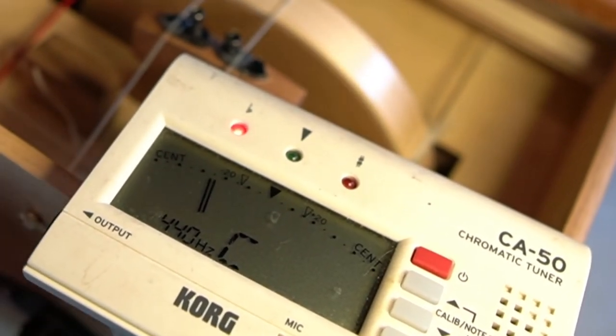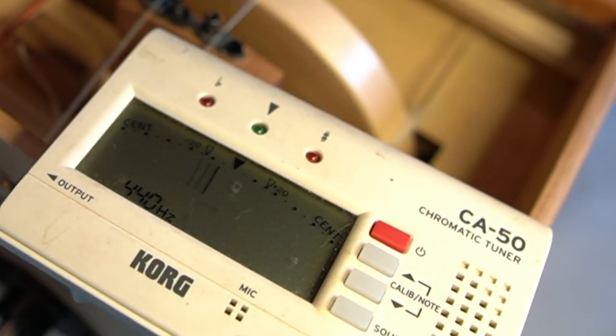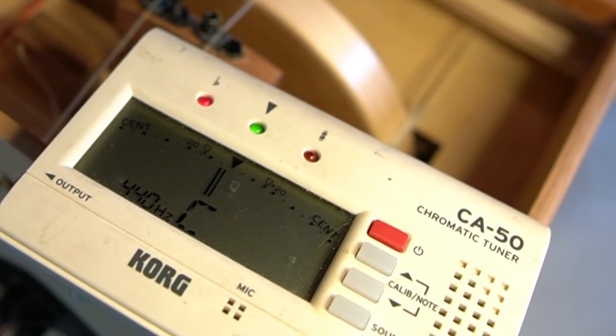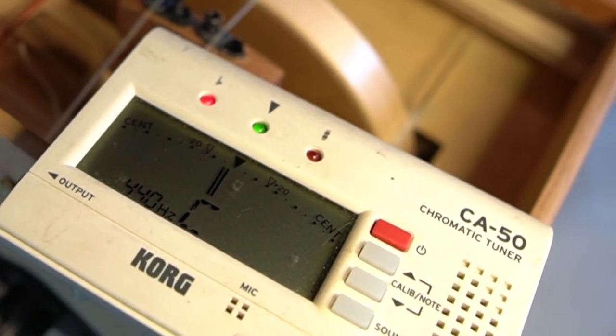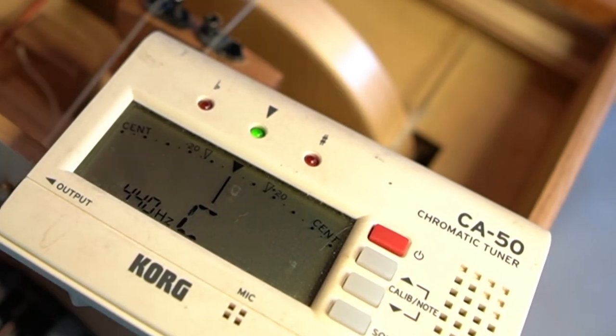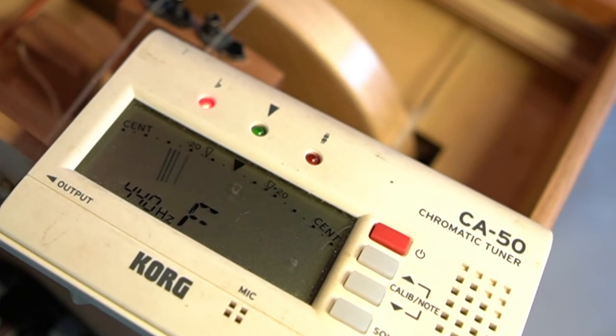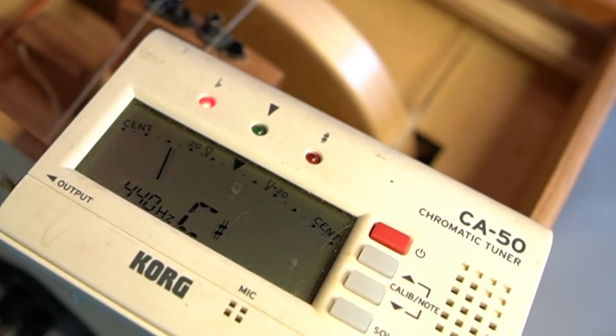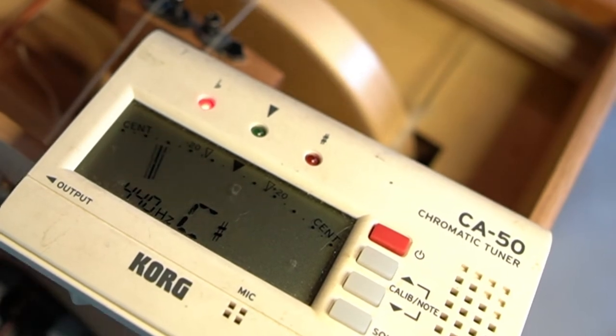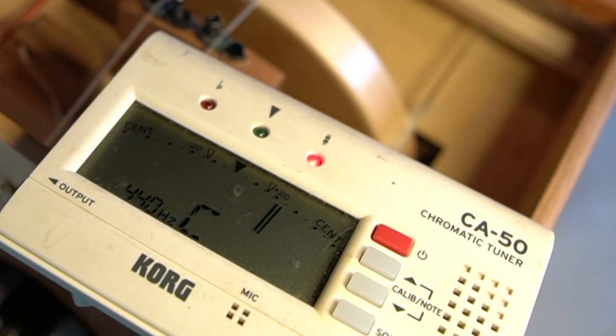Now I'm on a C, but it's a little flat. Hopefully you can see my tuner well enough that I want the needle there in the middle and also the green light on with no red lights around it. If you go too far, now I'm on C sharp, C with the little number sign beside it. So I need to back it down to a C. There we go.